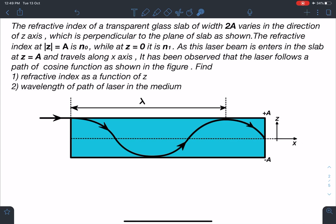The refractive index of a transparent glass slab of width 2a varies in the direction of z-axis which is perpendicular to the plane of the slab as shown. The refractive index at mod z, that means at z equal to plus a and minus a, it is n0, while at z equal to 0 on this line it is n1.